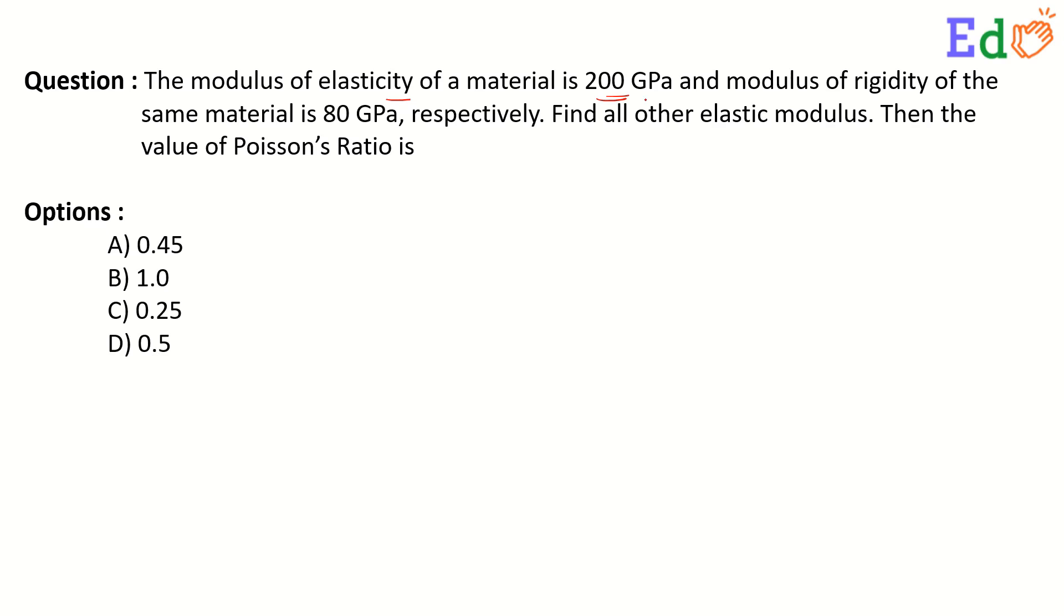GPa - Pa means Pascal, G gigapascal. Pascal means Newton per meter square, so gigapascal that is 10 to the power 9 Pascal.